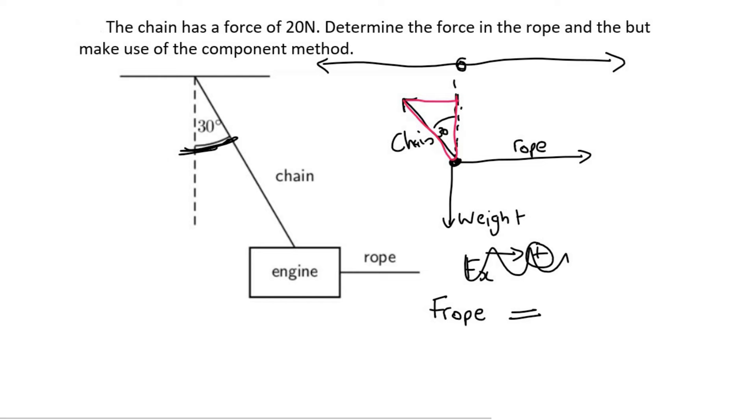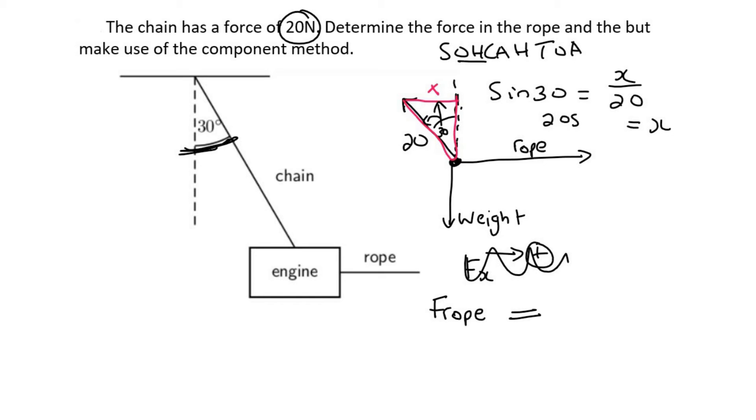Now the horizontal component is this one over here. Of course, if you wanted to, you could also use a triangle like that. It doesn't really matter. And so now we're going to use SOHCAHTOA. And so to find x, and this is 20 because that's the chain, they told us that that's 20. So x is the opposite, the 20 is the hypotenuse, so that'll be sin. So we can say that sin 30 equals x over 20. And if you get x alone, we would find that that is going to be equal to 20 sin 30. And if you work that out, that would be 10. So the horizontal force of the chain is 10 newtons. So the rope must be equal to 10 newtons.